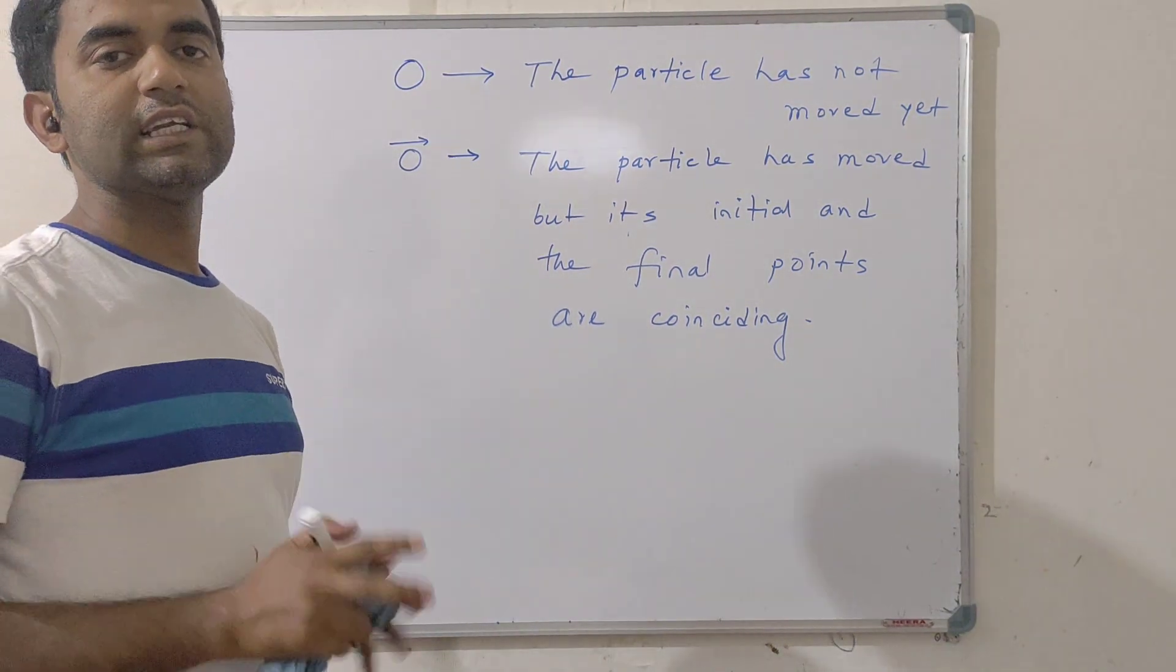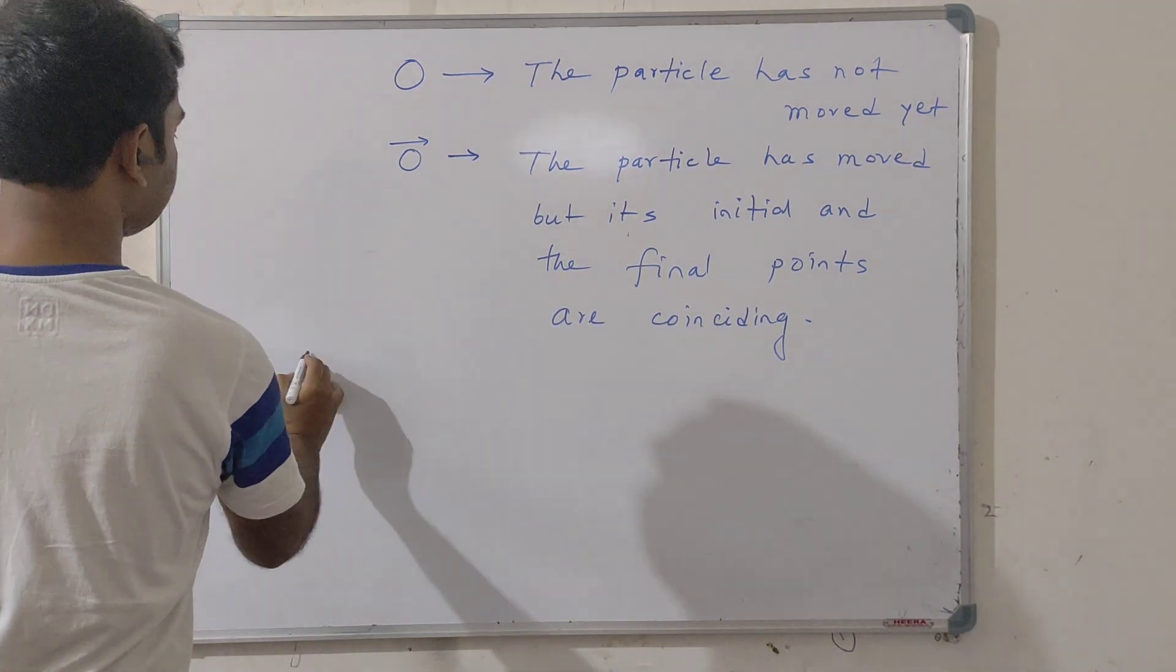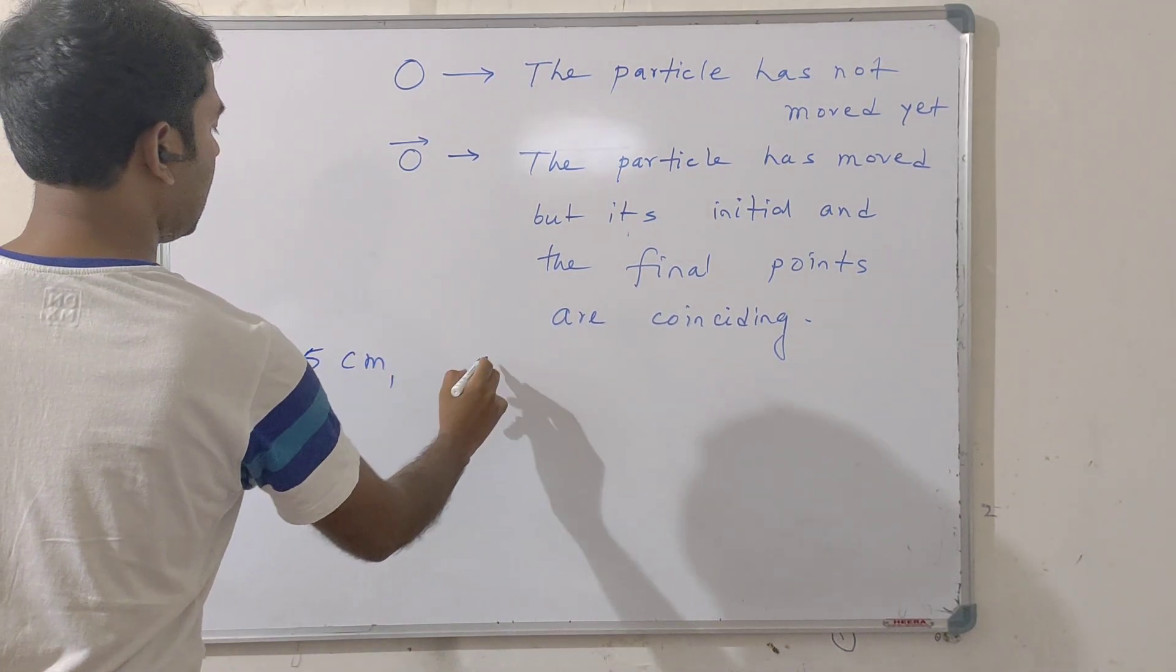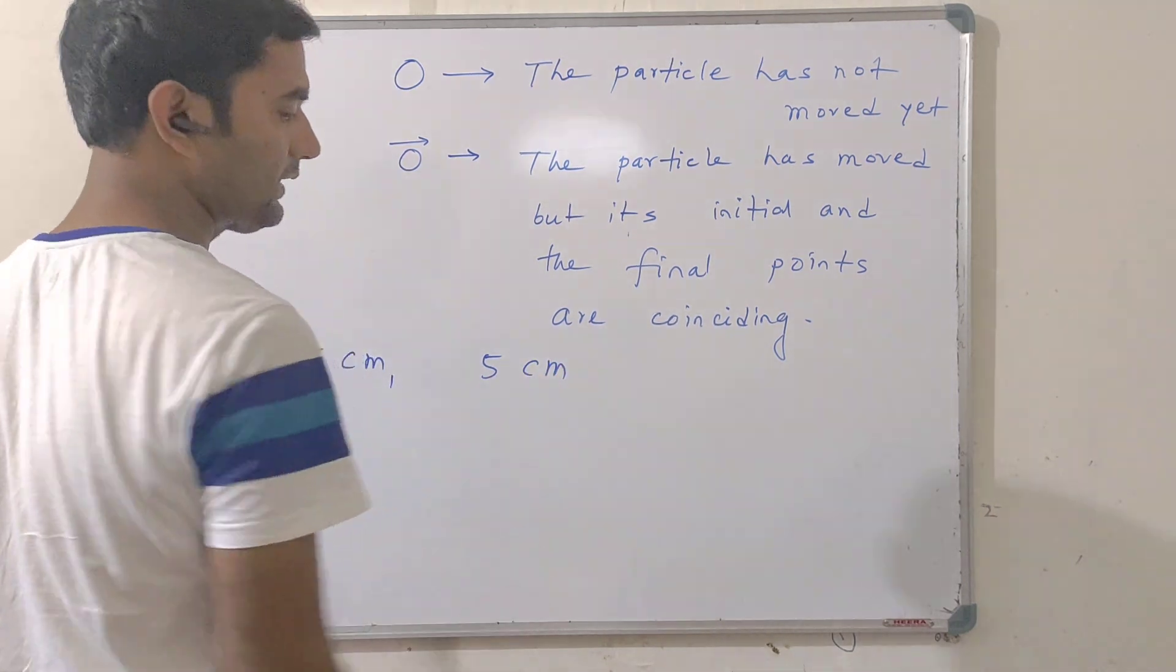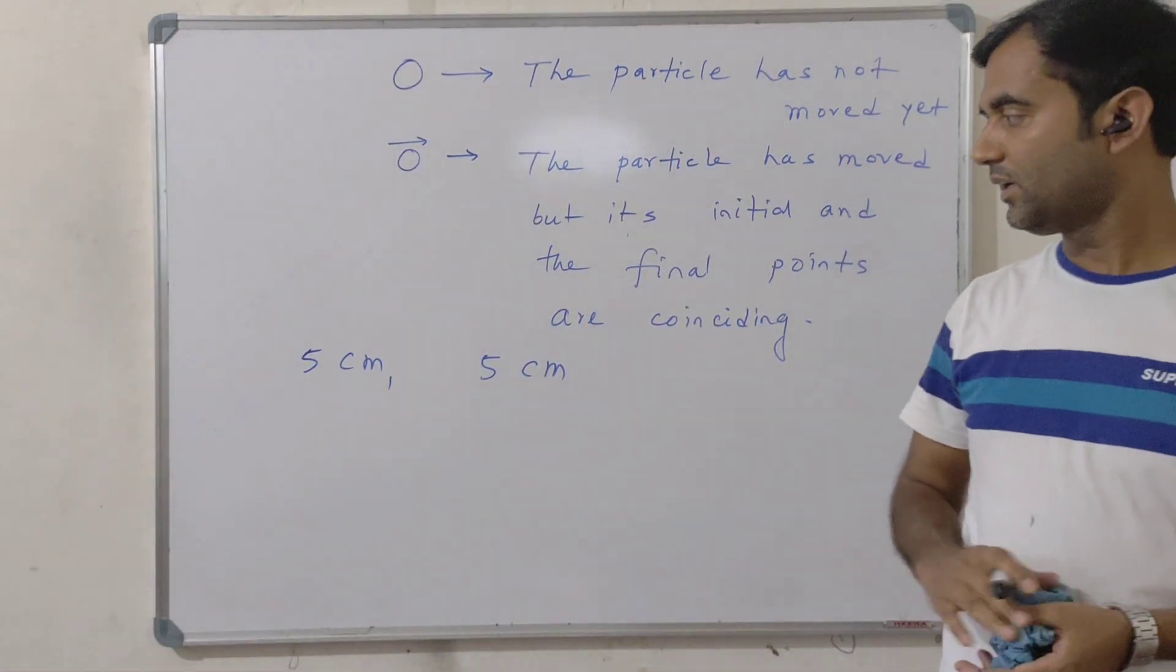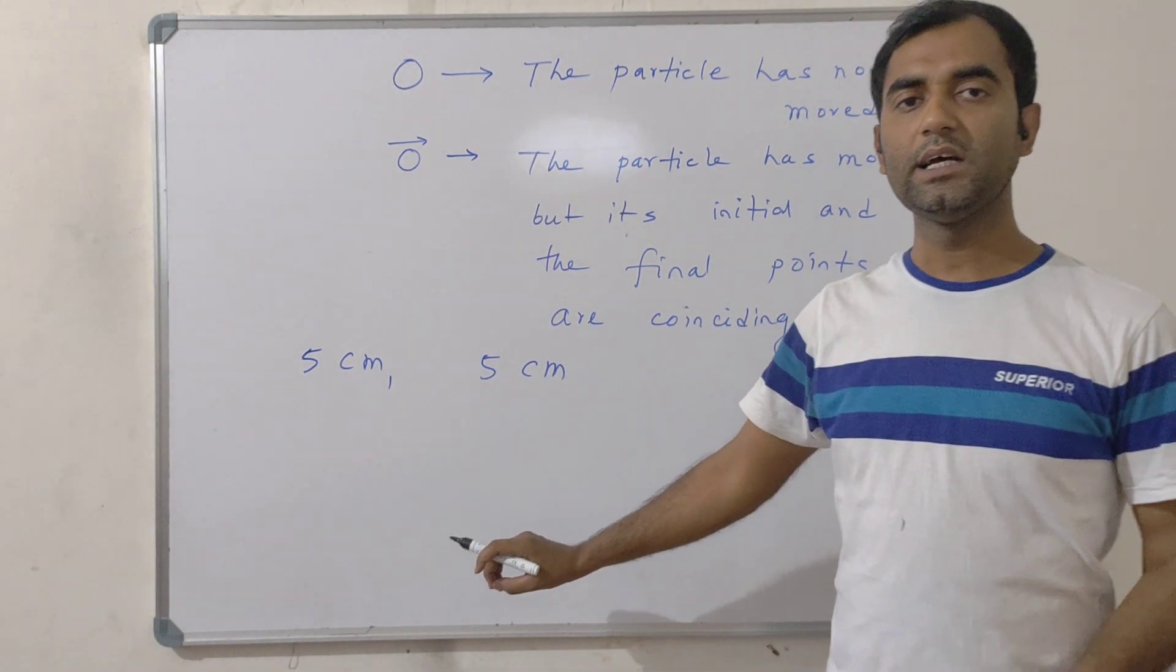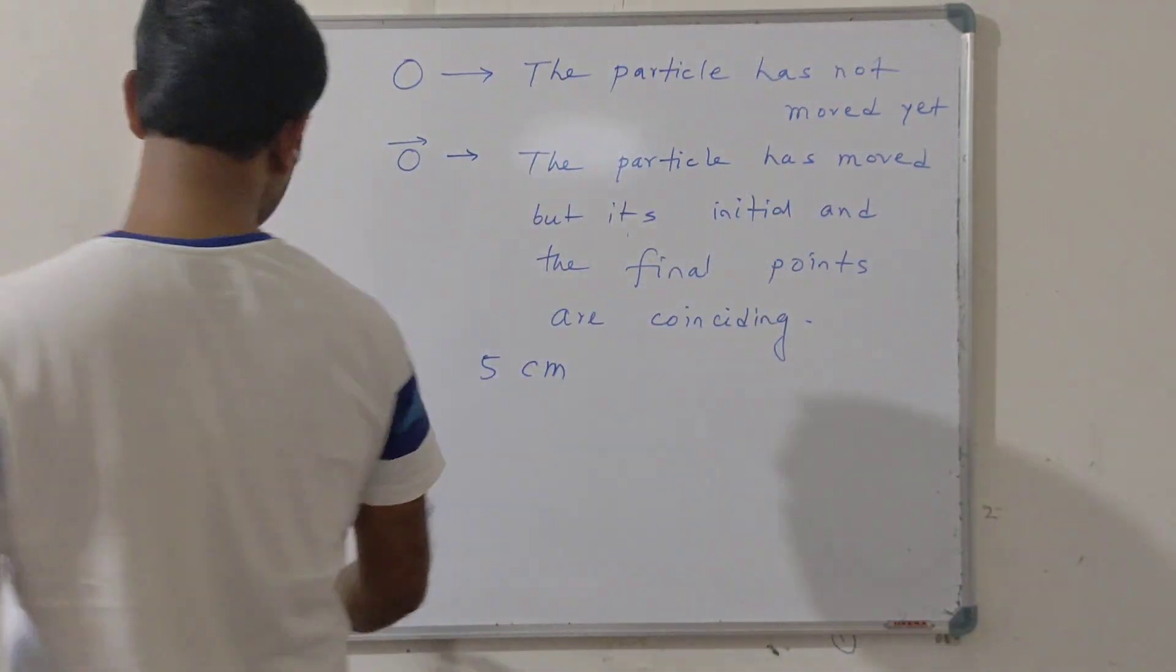We are considering lengths of two objects. One is of 5 cm and another is of 5 cm. What will be the basic difference between their length? The difference between the length is 5 cm minus 5 cm that will give 0 cm.